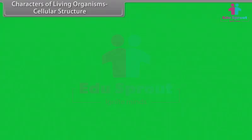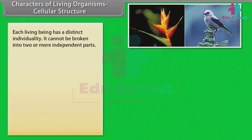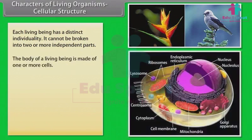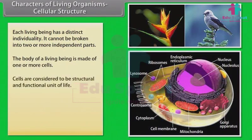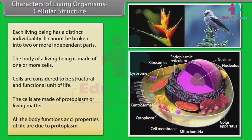Cellular structure: Each living being has a distinct individuality. The body of a living being is made of one or more cells. Cells are considered to be a structural and functional unit of life. The cells are made of protoplasm or living matter. All the body functions and properties of life are due to protoplasm.